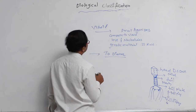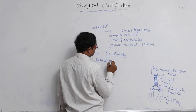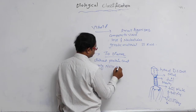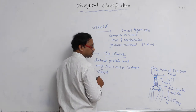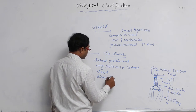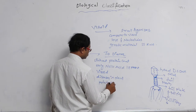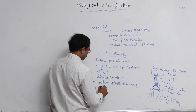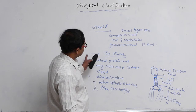T.O. Diener identified viroids. Viroids are without protein coats — only nucleic acid is present. That is the definition of viroid. It causes diseases only in plants. The diseases caused by viroids include: first, potato spindle tuber disease; second, citrus exocortis. These diseases are caused by viroids.